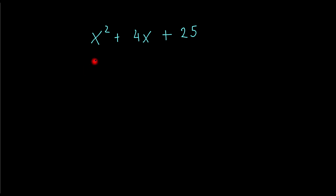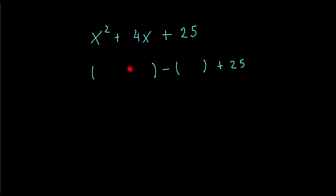What I would do initially is open up the brackets like so and put a subtraction sign there, open a bracket and then this part here — if it's a plus sign there, if it's a subtraction you just put a subtraction. Now what I would do is bring the x down and put the power over here.